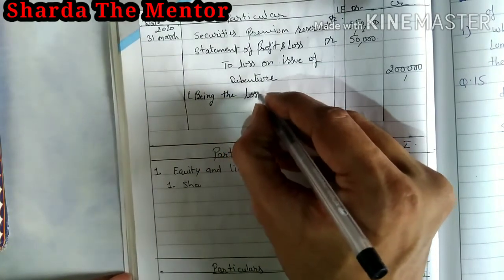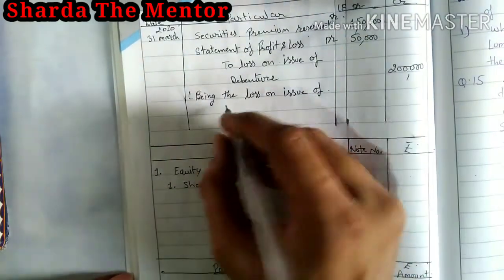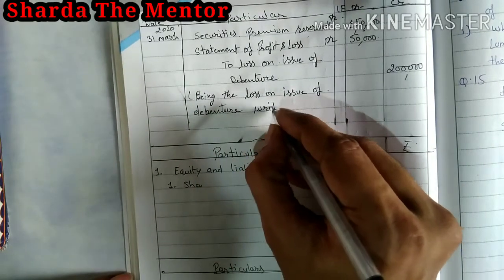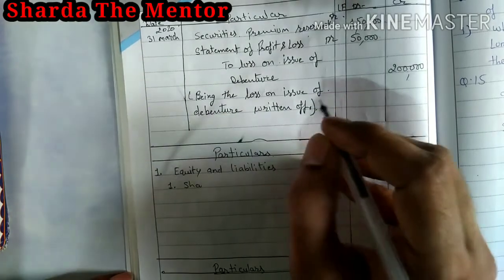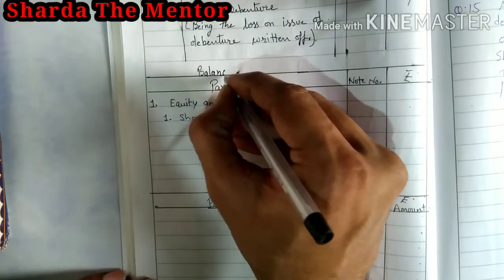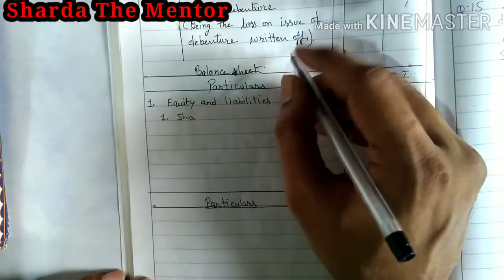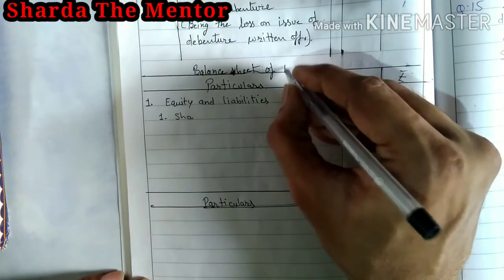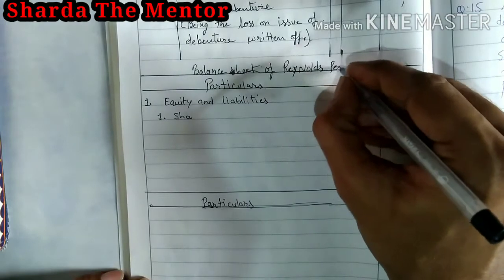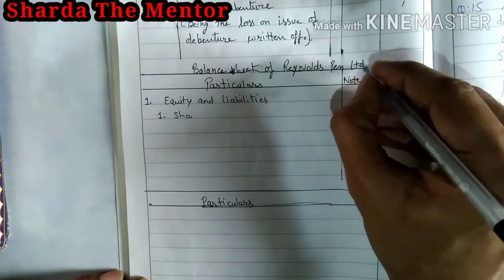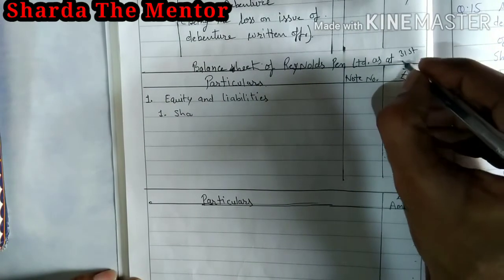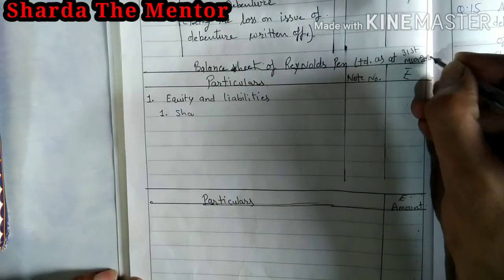Now we have to prepare the balance sheet. The question requires preparing the balance sheet. Since the balance sheet is in vertical format — which may be something new because in Class 11 the balance sheet format is different — the heading will be as of 31st March 2020. Before preparing the balance sheet, we will focus on the Notes to Accounts.